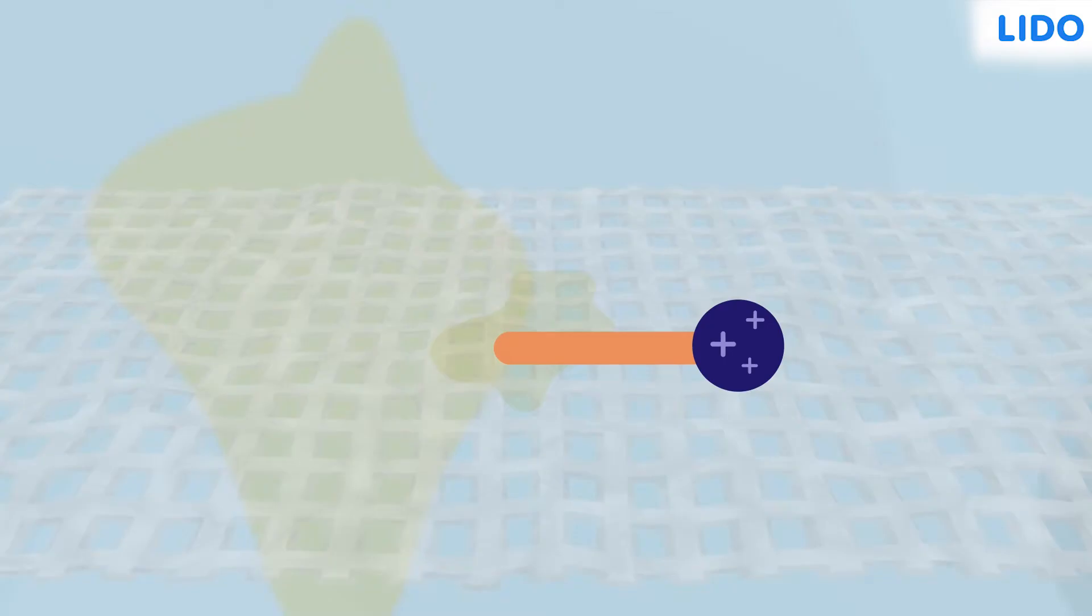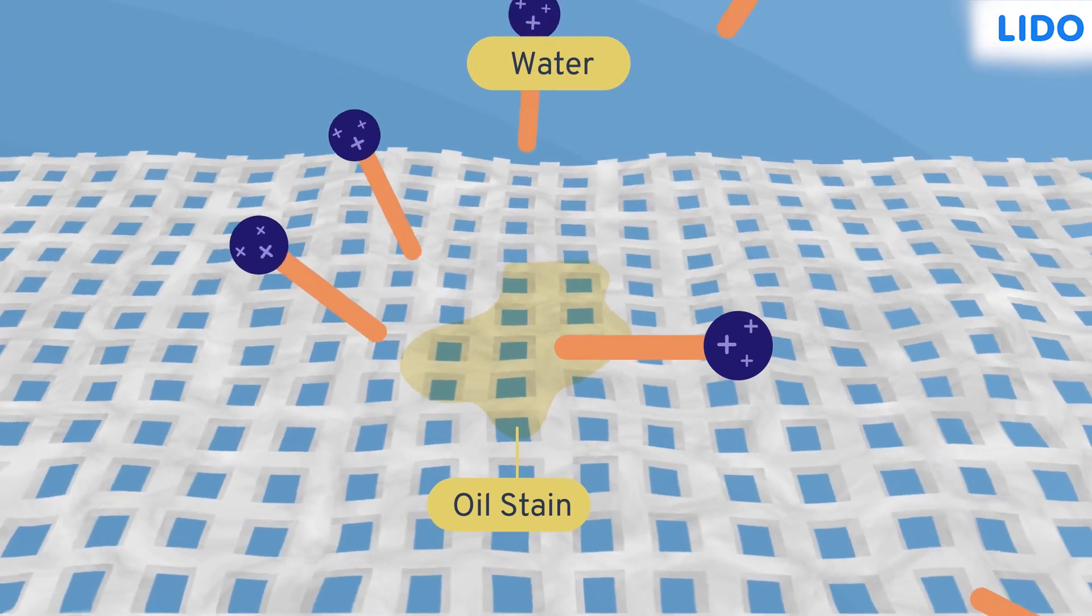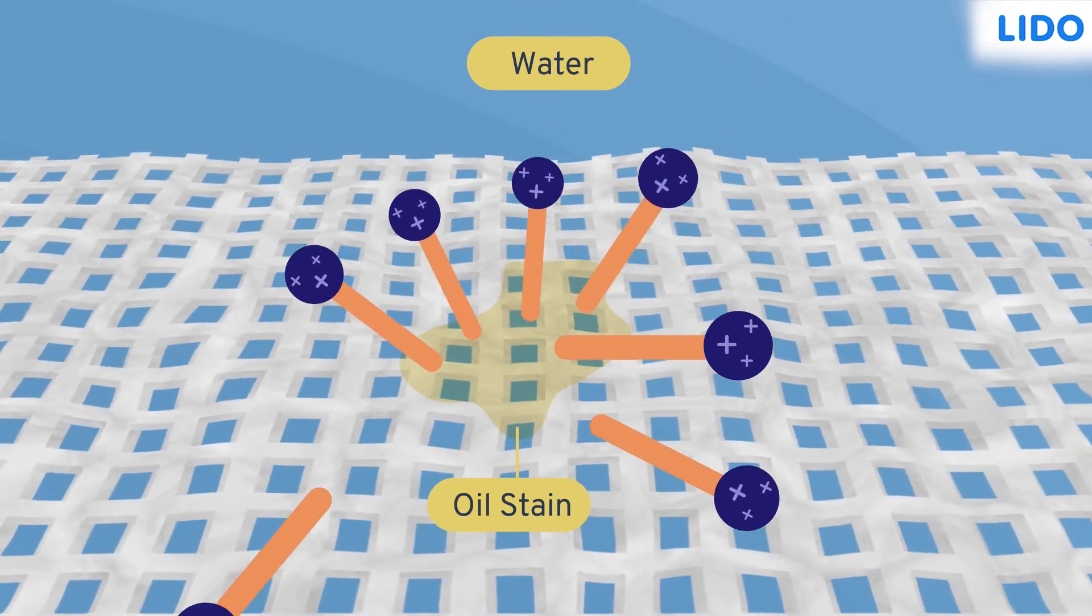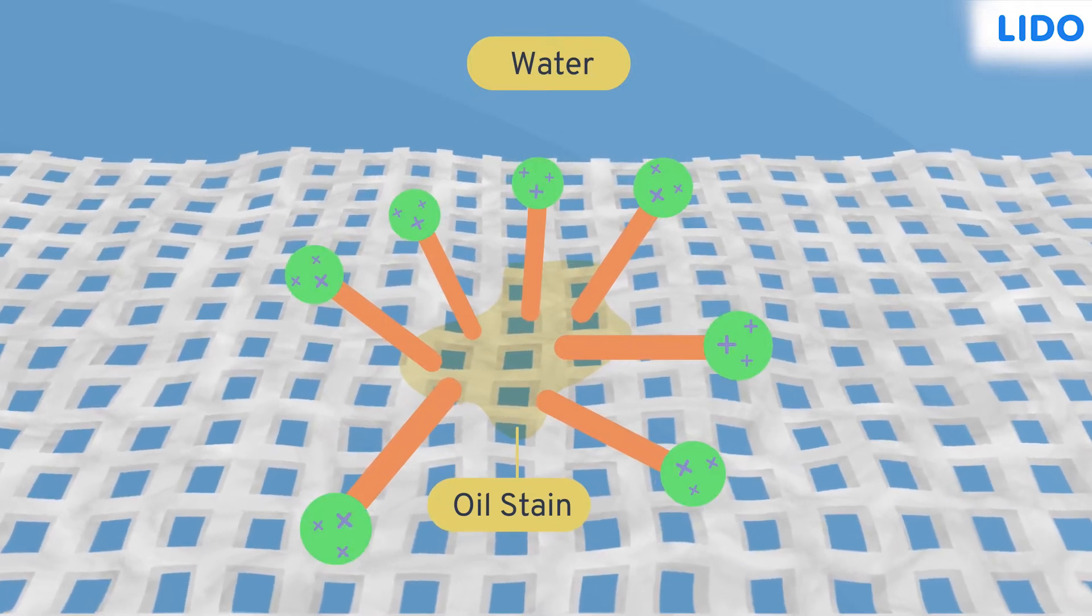When this detergent comes in contact with water and the oil stain, the hydrophobic tails of each molecule of detergent attach themselves to the oil stain and the hydrophilic head remains in contact with the water.